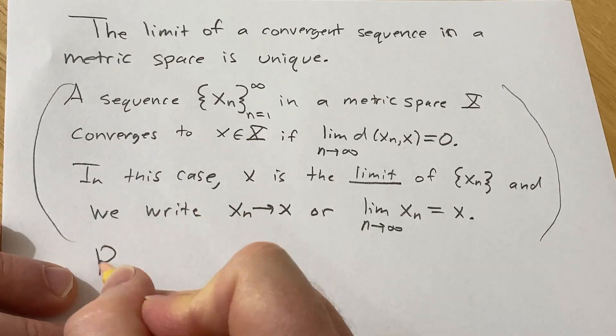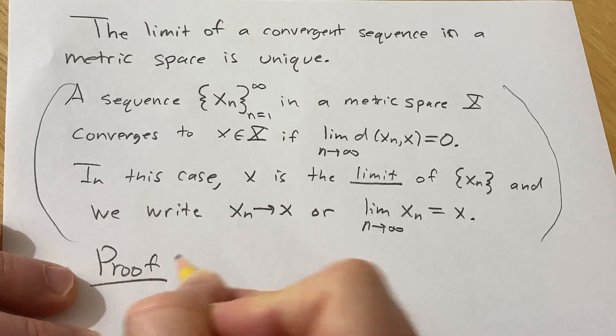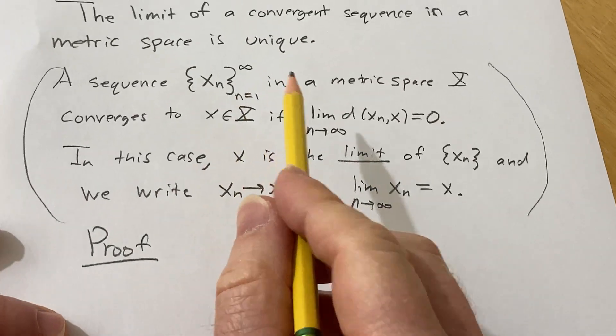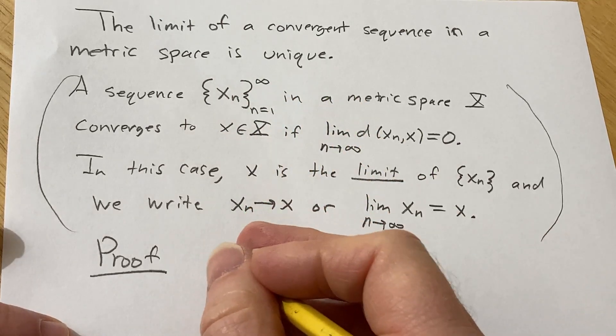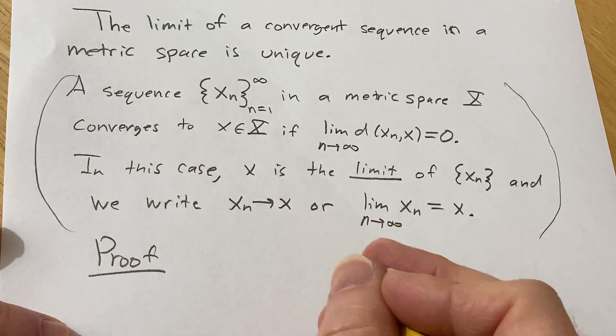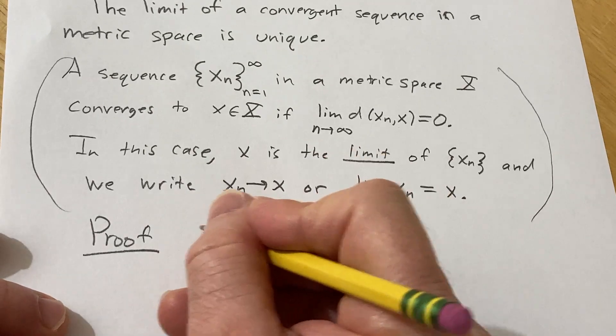Proof. So we have to show that the limit of a convergent sequence in a metric space is unique. So we'll suppose that we have two limits for a sequence and we'll show that they're actually the same.